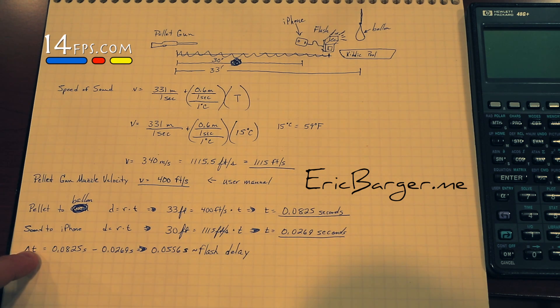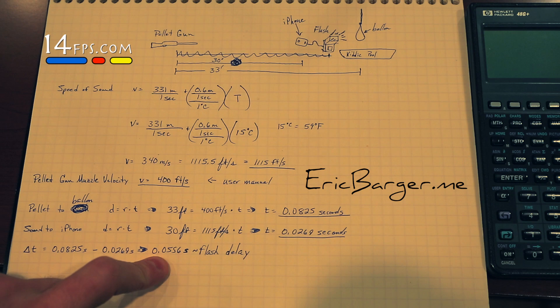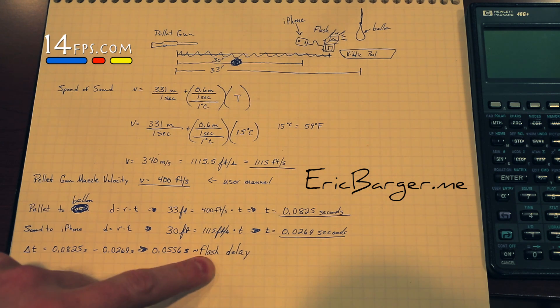The delta T, or difference in time, is simply one subtracting the other and taking the absolute value. So we had 0.0825 seconds minus 0.0269 seconds gave us a difference of 0.0556 seconds for our flash delay.